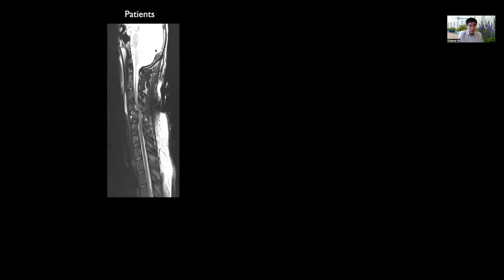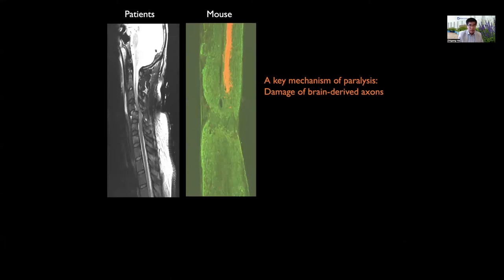This is the MRI image from a patient with spinal cord injury showing a lesion that damages the spinal cord. In my lab, we applied different injury paradigms in mice to model spinal cord injury. In both patients and models, a common feature is the damage of brain-derived nerve fibers or axons that cuts the connection between the brain and the spinal cord, which is a key mechanism of paralysis.